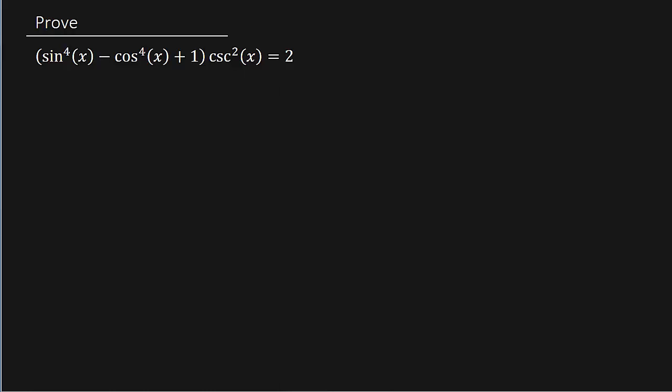What's going on everybody, back for another video. Here we got a trig identity we want to prove. We want to show that all of this is equal to 2. Whenever you're proving a trig identity, you want to take the more complicated side and see if you can simplify it to the other side. Obviously here the left hand side is more complicated.